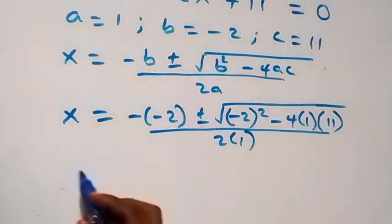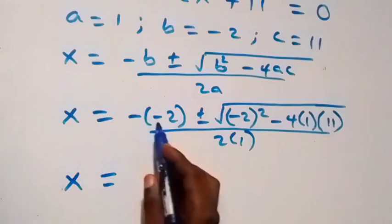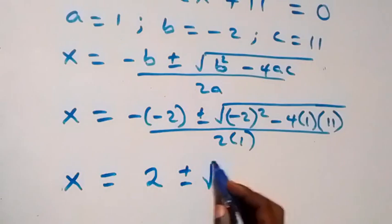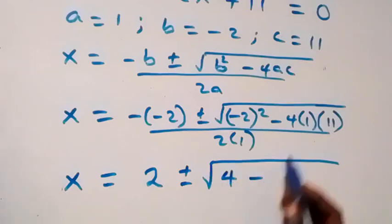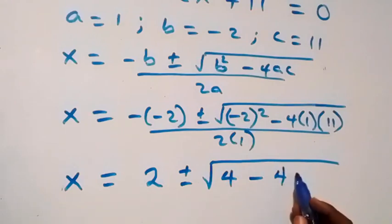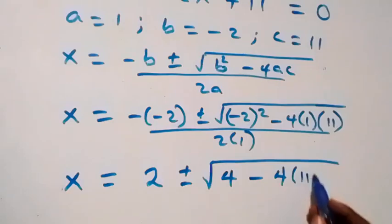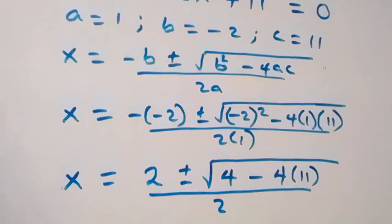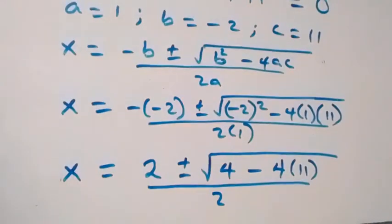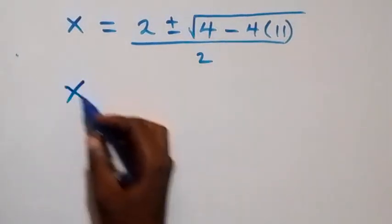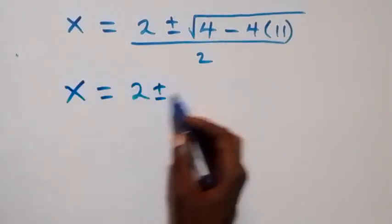From here, minus times minus gives plus, so we have plus 2, plus or minus square root of — here we have 4 times 11 which is 44, we can write it as 4 times 11 — over 2. We can factor 4 out from inside the bracket, giving us x equals to 2 plus or minus square root of...